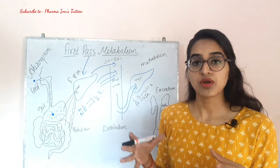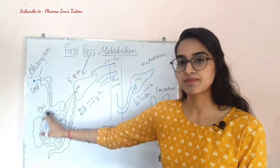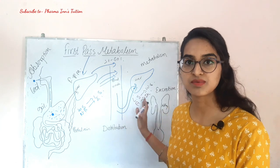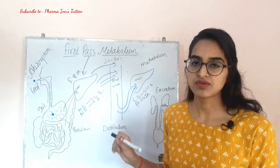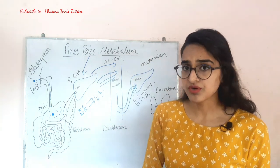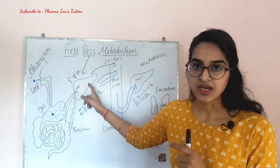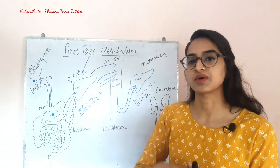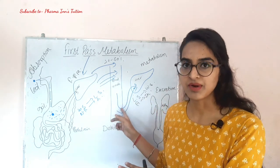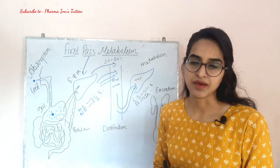For example, propranolol has very high first-pass metabolism — if we give 100% of propranolol, only about 2–3% reaches our systemic circulation because so much is lost. So if we give propranolol together with carbamazepine, the liver is busy metabolizing one drug, and propranolol's concentration becomes higher in our blood.